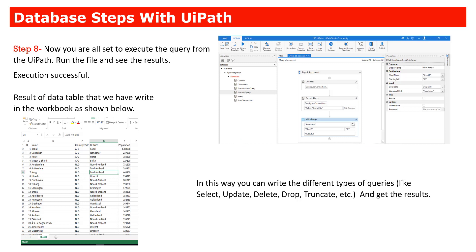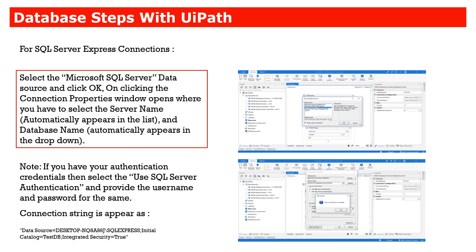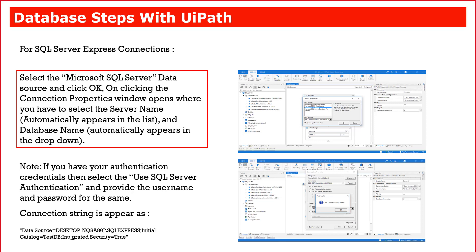Step eight covers writing the data from Execute Query to an Excel file. Different database connectivity requires different connection strings. The current example uses MySQL Server. If you want to connect to SQL Server, only the connection string changes — all other steps remain the same. I'll now go to UiPath Studio to demonstrate how to connect and communicate with databases.